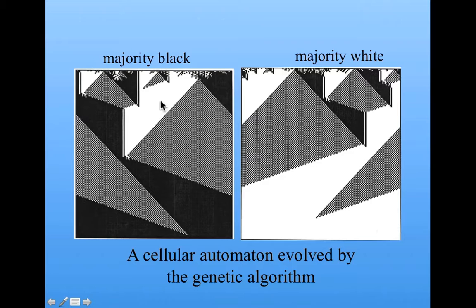Here's a picture of the behavior of one evolved cellular automaton that had high fitness. You can see its behavior. Here's a majority black initial configuration, the one dimensional lattice. And then over time we see these patterns start to emerge and finally down here at the bottom we get an all black configuration. So it had correct behavior.